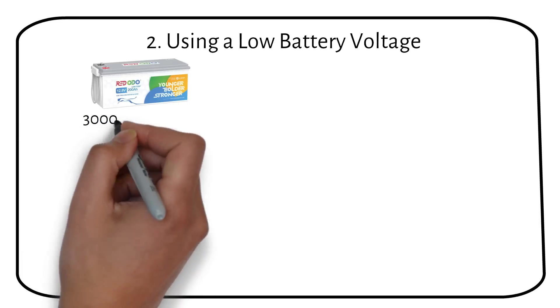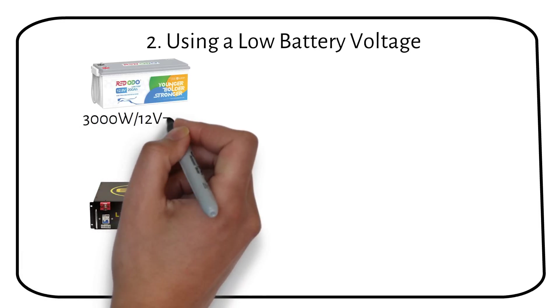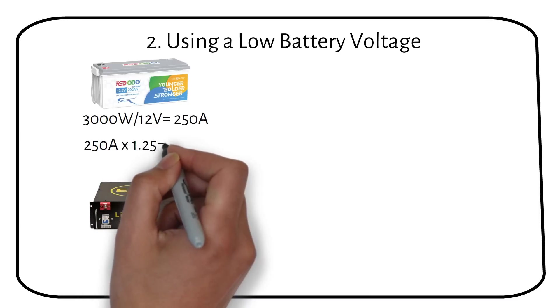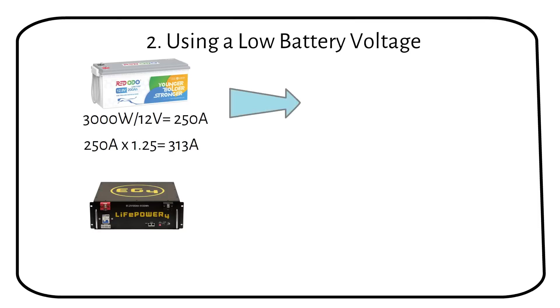For instance, a 3 kilowatt inverter on a 12 volt system draws 250 amps. Adding the required safety factor, we will get 313 amps.